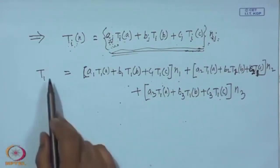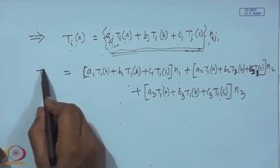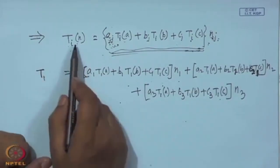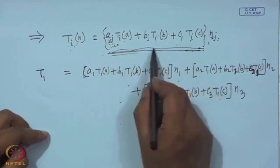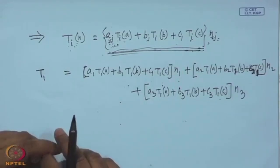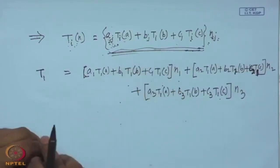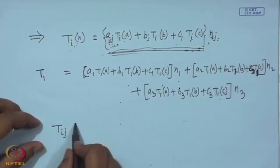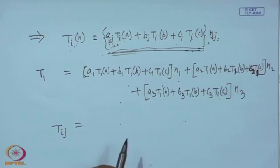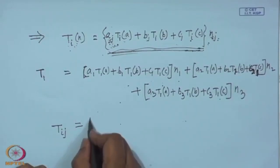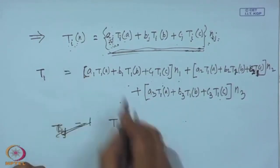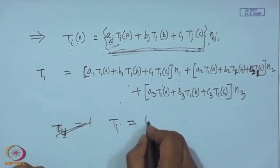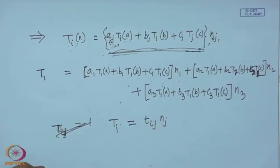So that will be the first component of this surface force on this element. The term in the bracket is called the stress tensor, denoted by two subscripts. We will simply write it as T_ij. T_i equals T_ij n_j, where T_ij is called the stress tensor, which is a second-order tensor.